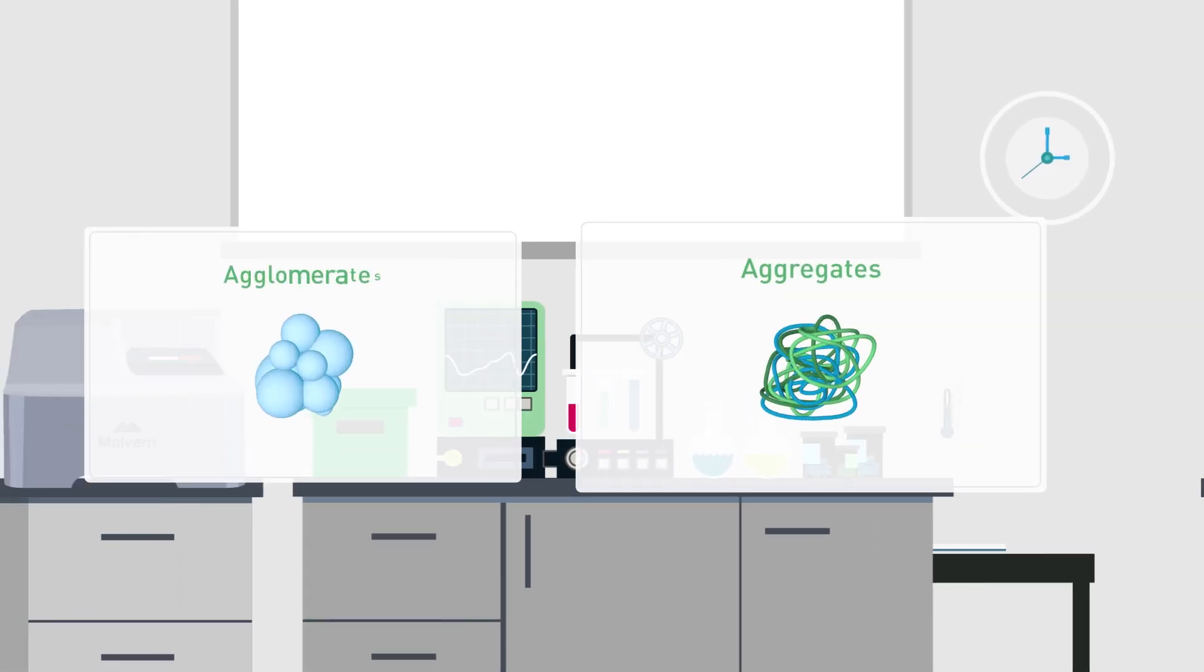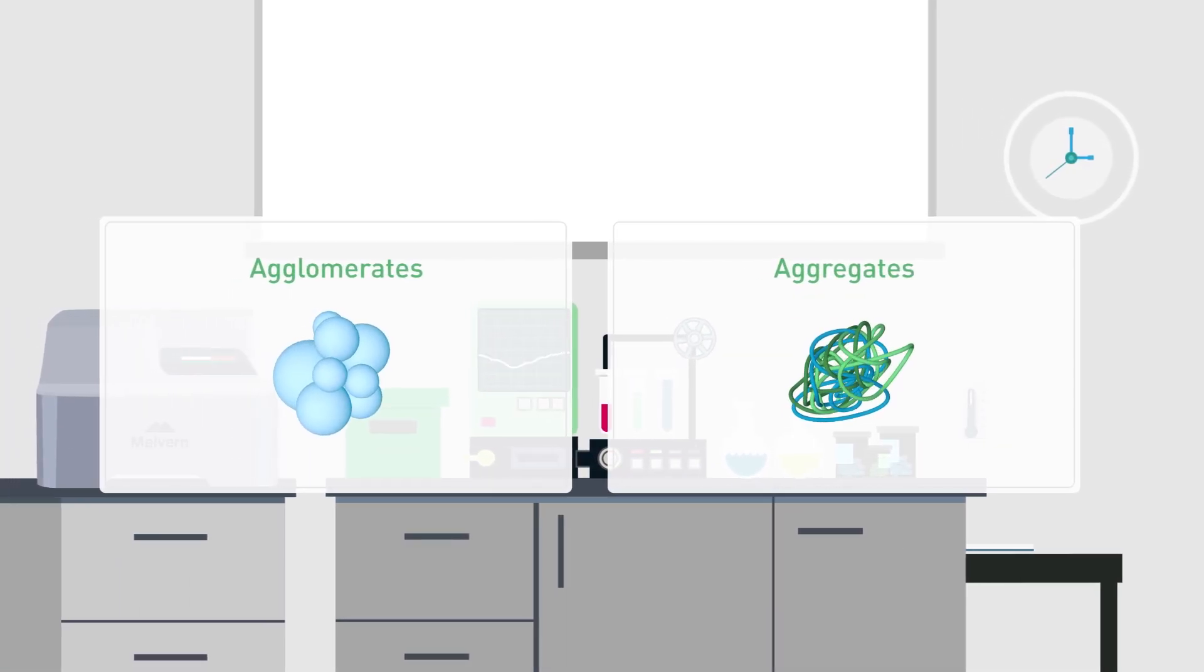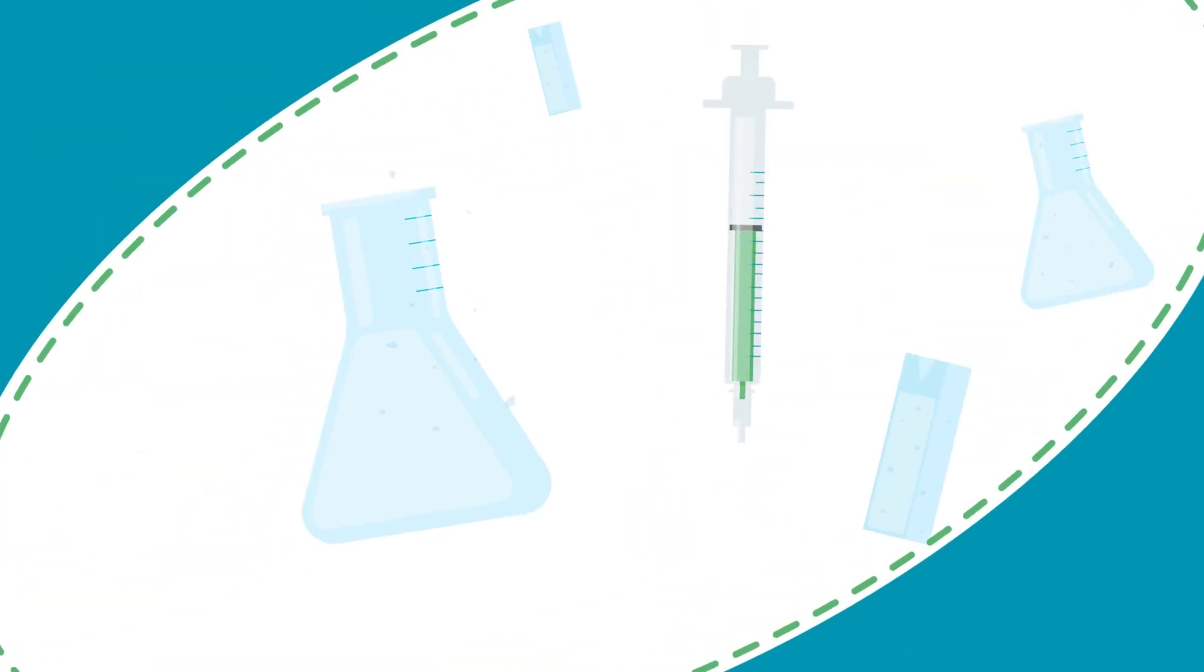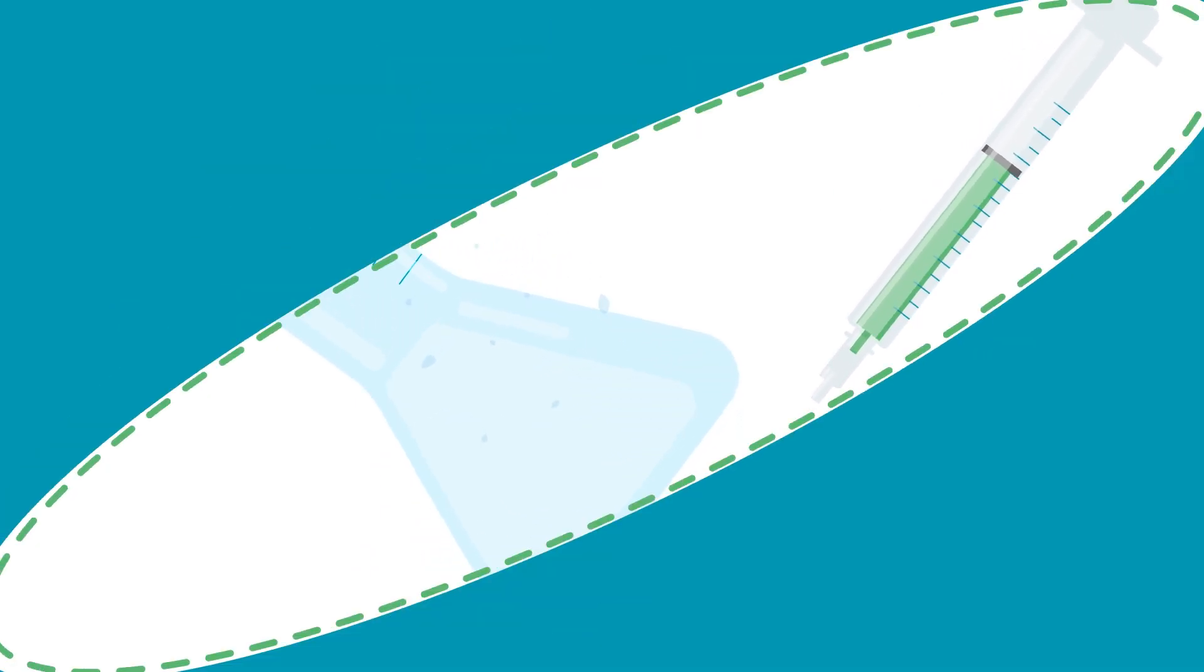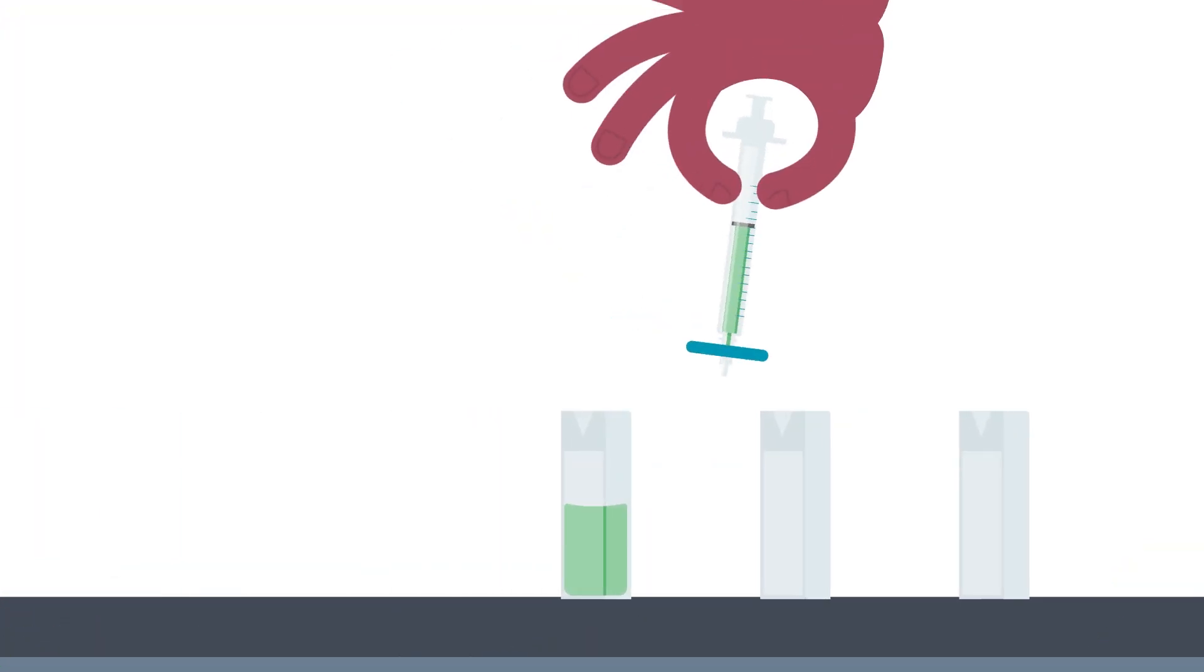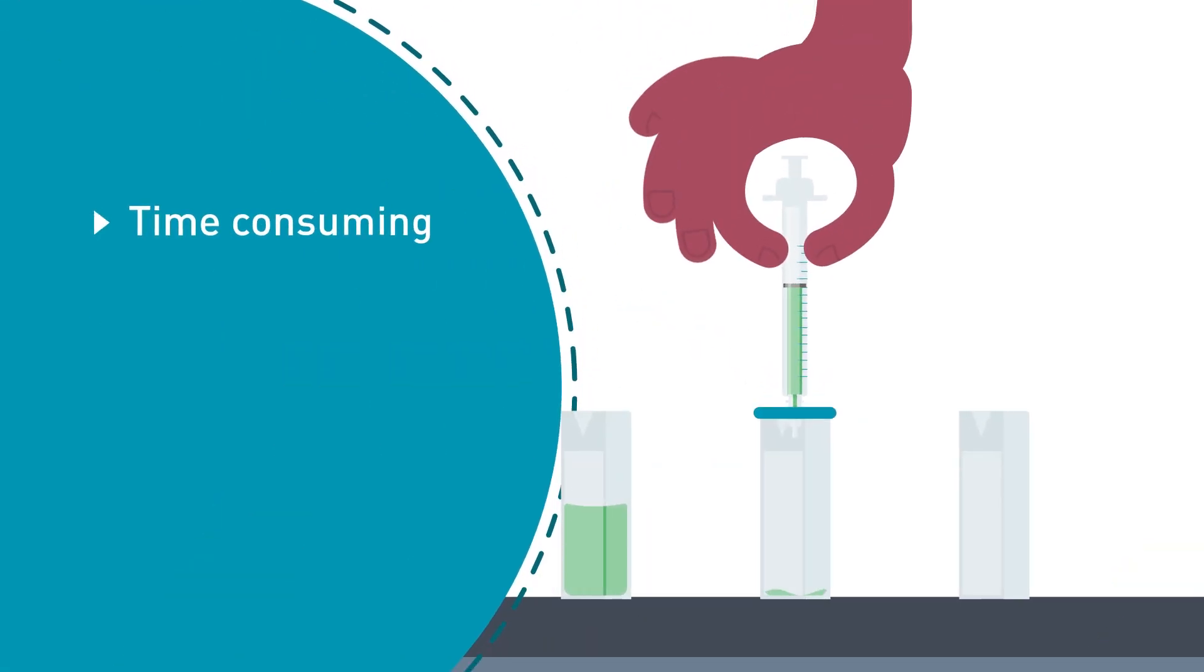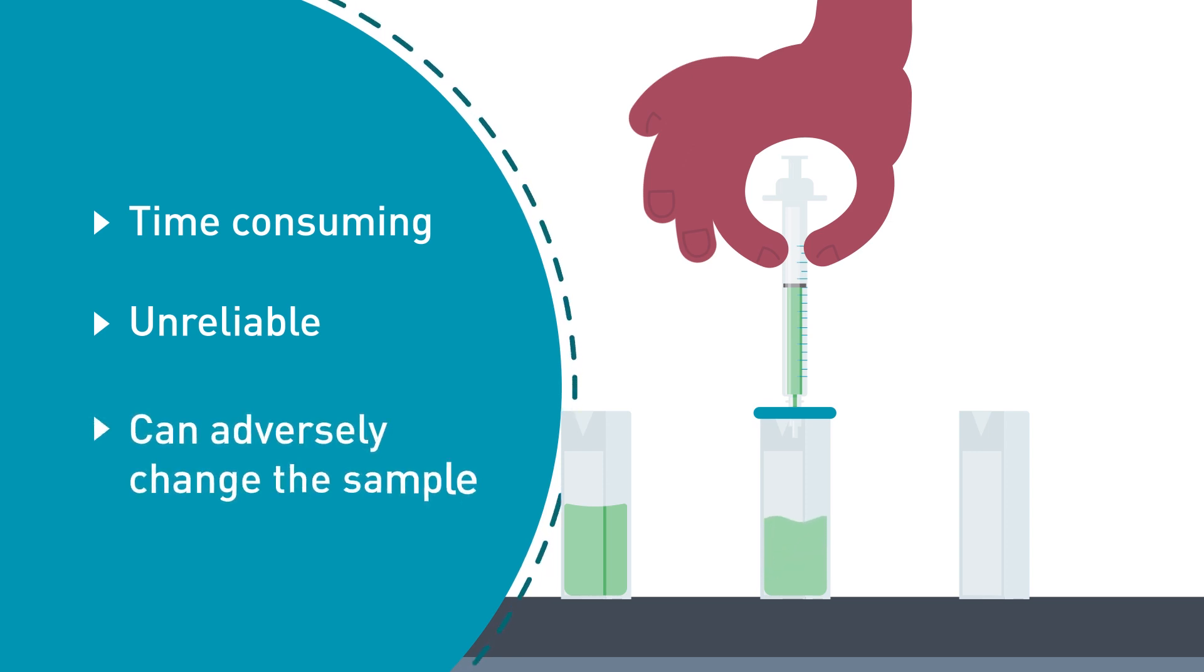Large particles may be sample agglomerates and aggregates, or extrinsic contamination from dirty labware or filter spoil, typically referred to as dust. While careful sample preparation can help, it can be time-consuming, unreliable, and can adversely change the sample.